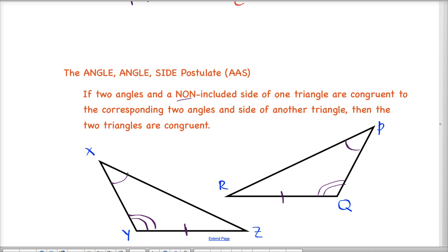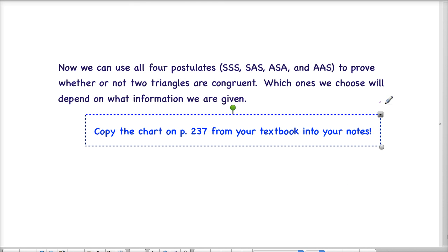So that's good. It's nice information to know, and we're going to use this information to prove that we have two triangles congruent. So we're going to have our four postulates: side-side-side, side-angle-side, angle-side-angle, and angle-angle-side. We're going to use those to prove whether or not two triangles are congruent, and which ones we use will depend on what information we're given.